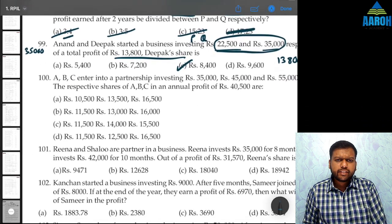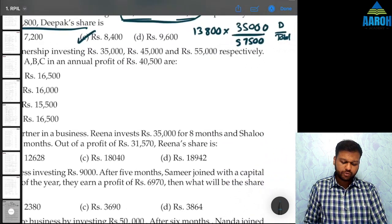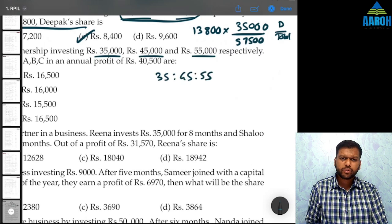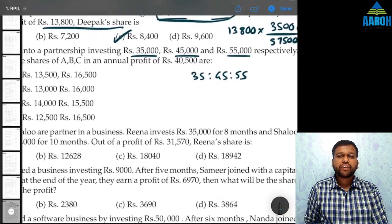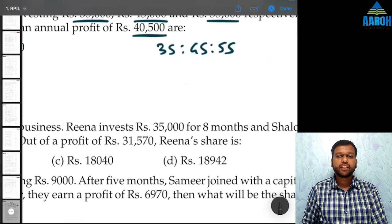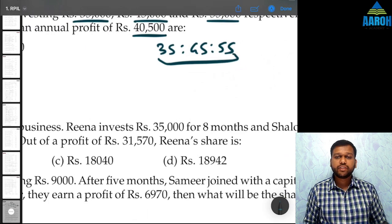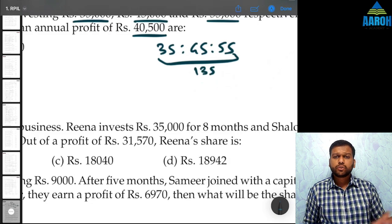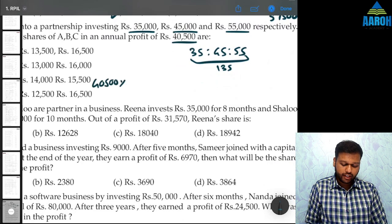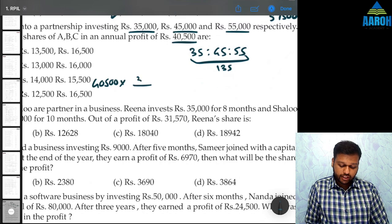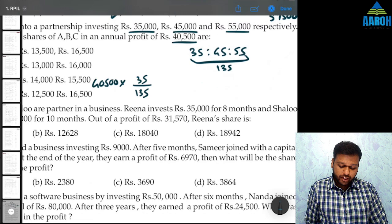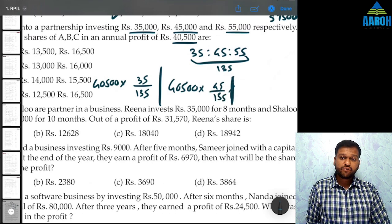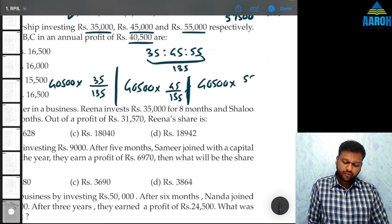Question 100. A, B, C enter into partnership investing 35,000, 45,000 and 55,000 respectively. Find their respective shares in annual profit of 40,500. Take the total: 35 + 45 + 55 = 135. A's share = 40,500 × 35/135; B's share = 40,500 × 45/135; C's share = 40,500 × 55/135.